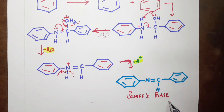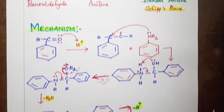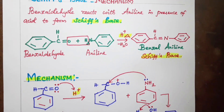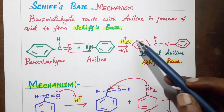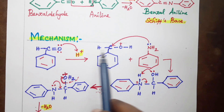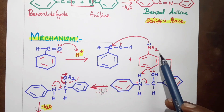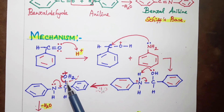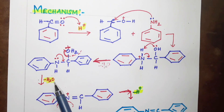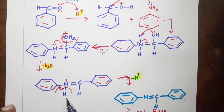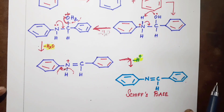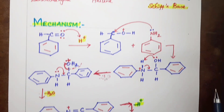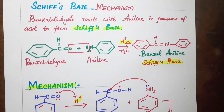So, benzaldehyde reacts with aniline in the presence of acid to give a Schiff's base. The mechanism involves: H+ addition to oxygen, nucleophilic attack by aniline nitrogen, water molecule removal, and formation of the C=N Schiff's base. Please like, share, and subscribe. Thank you.